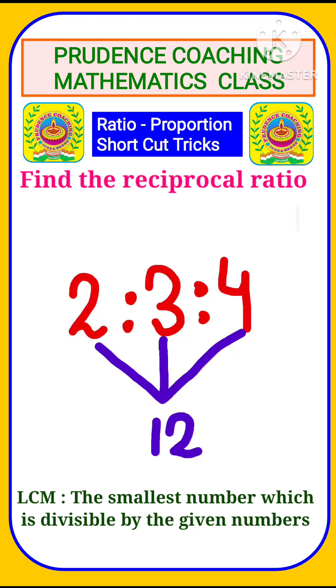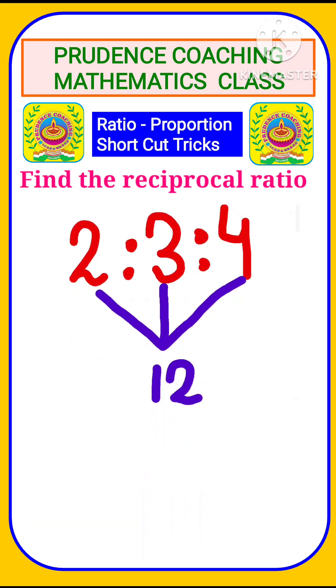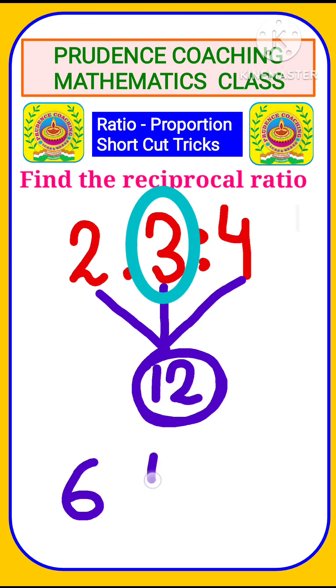Now we're going to start with the first one, that is 2. If you divide this 12 by 2, what you will get? You'll get 6. Next we have 3, so divide 12 by 3, that is the next number. You'll get 4. Three fours are 12.